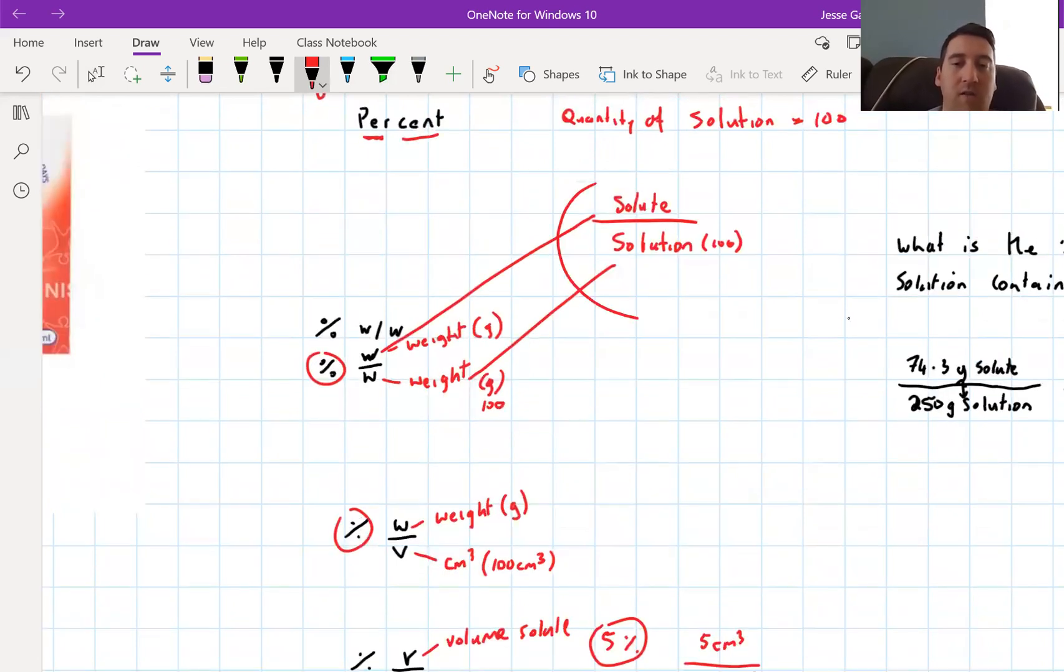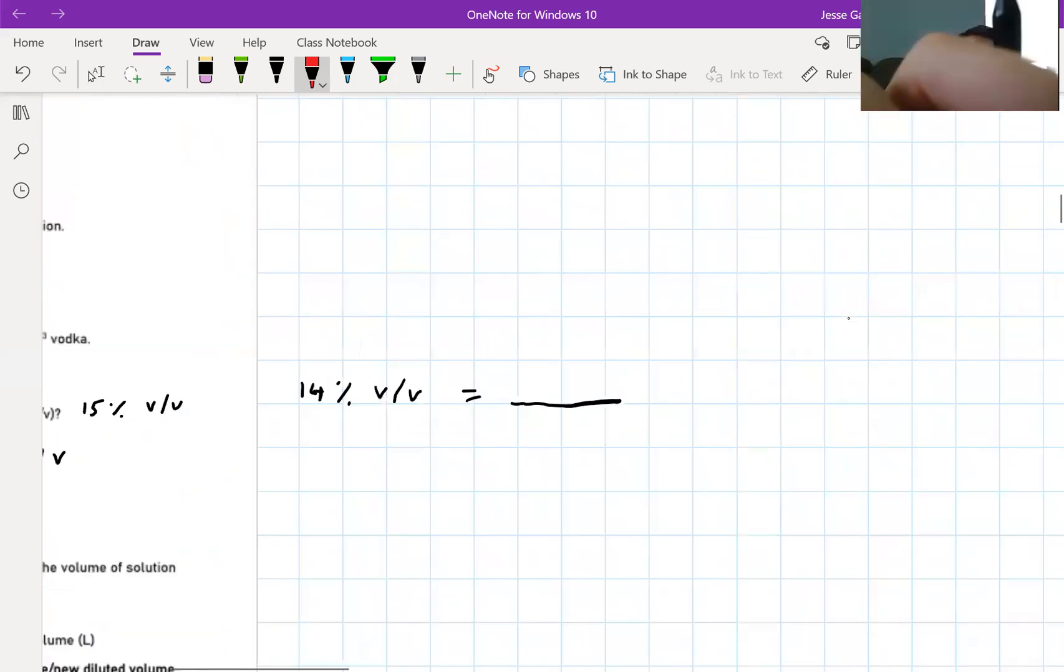What we know is that 14% V over V means volume of solute per volume of solution. Which means we have 14 in volume cm cubed. This is cm cubed and this is also cm cubed. If it's percentage, then it's 14 out of 100. So 14 out of 100 of the wine is alcohol. Let's label this: 14 cm cubed is the solute or the alcohol, 100 cm cubed is the solution.